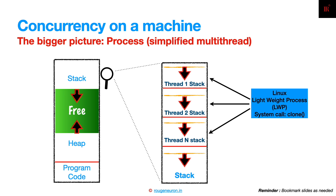That is a standard number per process. On Linux, threads are called lightweight processes because they share a lot of resources within a process. They take a large chunk of already-existing infrastructure from the process and simply build a stack on top of it.